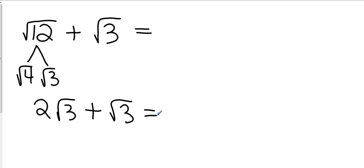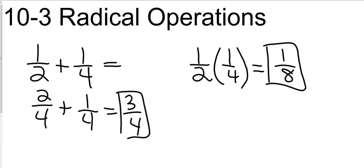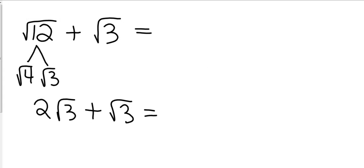What is two square roots of three plus the square root of three? When we added fractions, did we add the common denominators? No. One of the reasons why we needed a common radical is so we would have a common radical in the end. So, what's two square roots of three plus the square root of three? Three square roots of three.